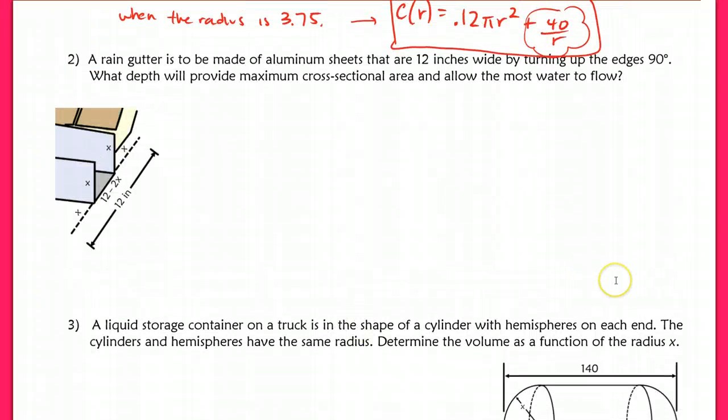In number two, it says a rain gutter is to be made of aluminum sheets that are 12 inches wide by turning up the edges by 90 degrees. What depth will provide maximum cross-sectional area and allow the most water to flow? So we're trying to find a maximum here. And if you look at your picture, hopefully this is making sense to you—the entire sheet of aluminum was 12 inches. Then you turned this part upright at this 90-degree angle here, and this 90-degree angle here to form the gutter shape. So that means that if both pieces are the same height, then this section inside here is 12 minus 2x, the original piece minus both x values here.